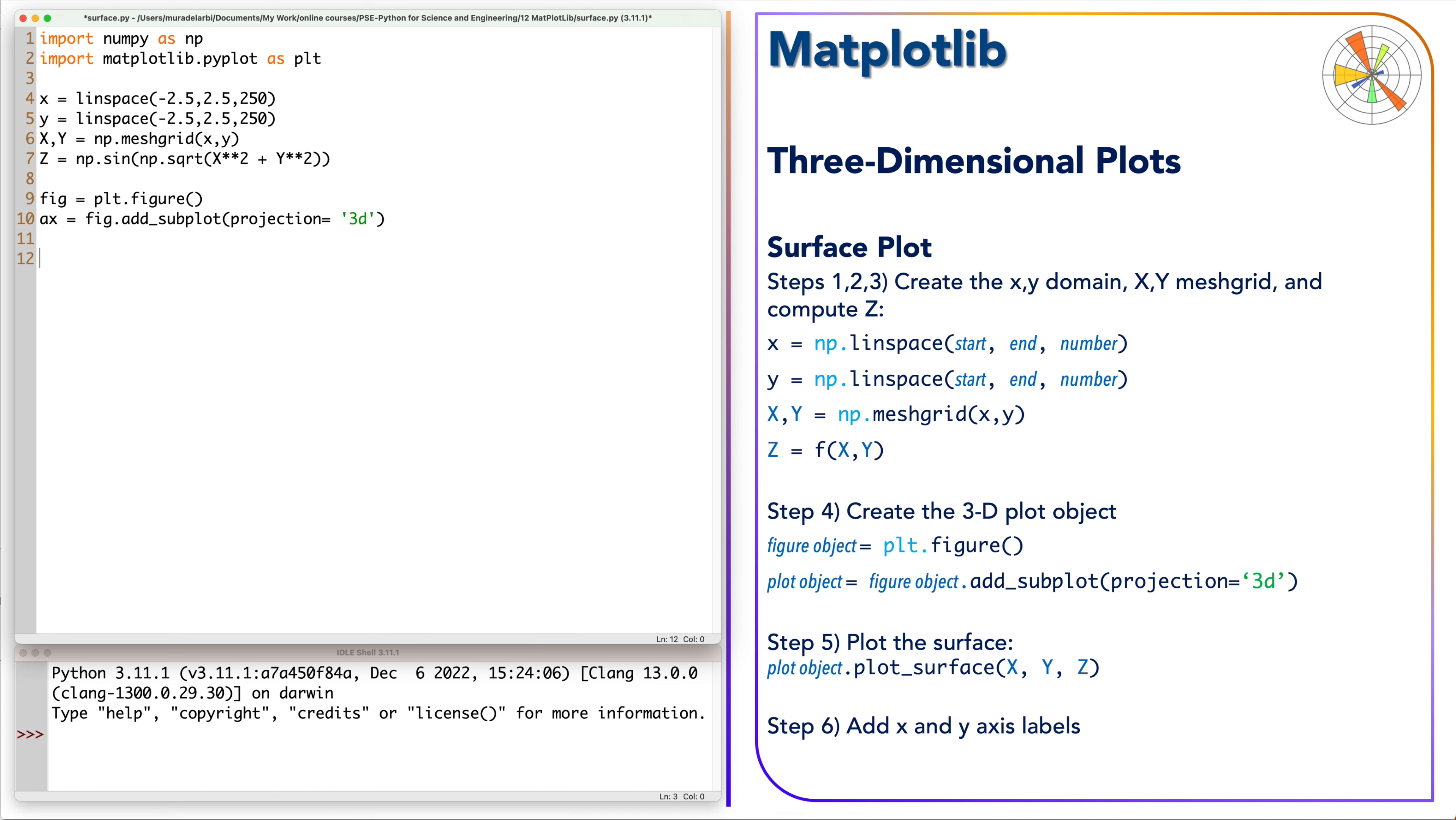Now we can create the graph by using the plot_surface function. Finally, we can add the labels by using the function set_xlabel, set_ylabel, and set_zlabel.